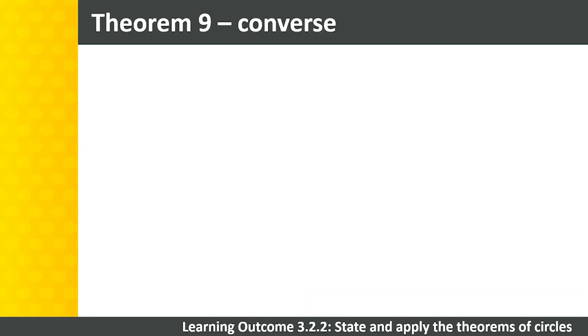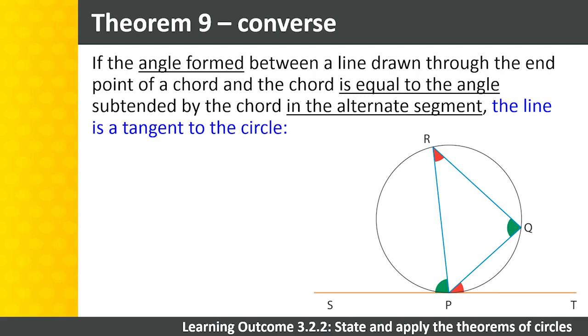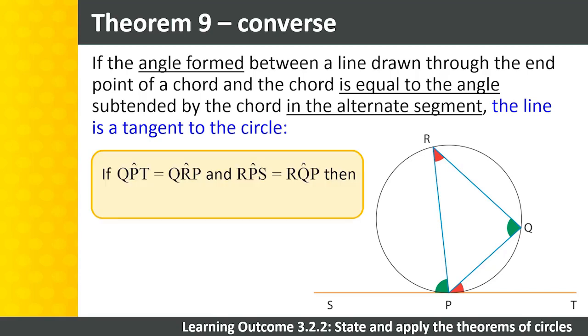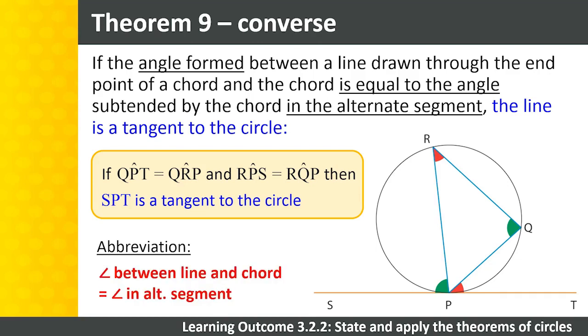The converse of theorem 9 is: if the angle formed between a line that is drawn through the end point of a chord, and the chord is equal to the angle subtended by the chord in the alternate segment, the line is a tangent to the circle. In this diagram, we have been given that angle QPT equals angle QRP, and angle RPS equals angle RQP. Therefore, we can conclude that SPT is a tangent to the circle. The abbreviation to use in reasons is angle between line and chord equals angle in alternate segment.